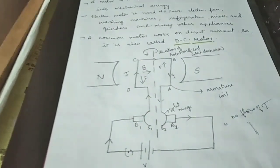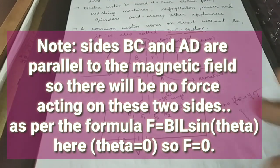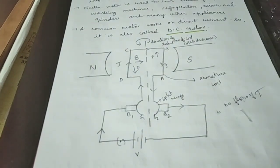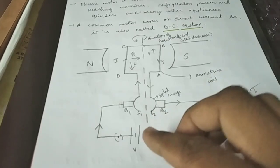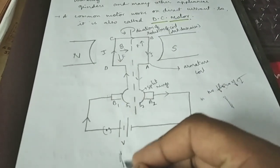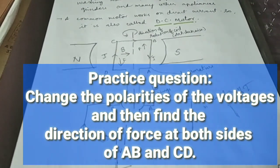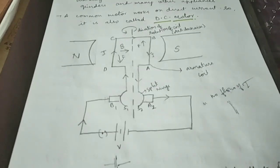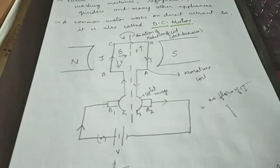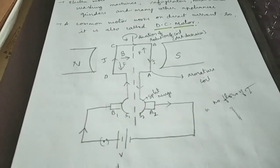This is the complete working principle of the DC motor. The direction of rotation of the coil is anti-clockwise. For practice, interchange the polarities — bring minus to one side and plus to the other — and check which direction the coil rotates. Draw the diagram again and practice it by yourself. Thank you for watching, please share and subscribe so I can make more physics videos for you.